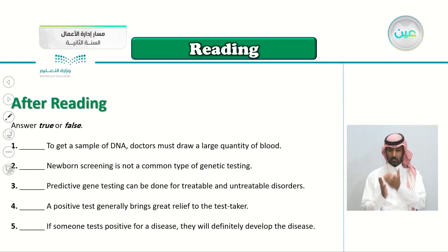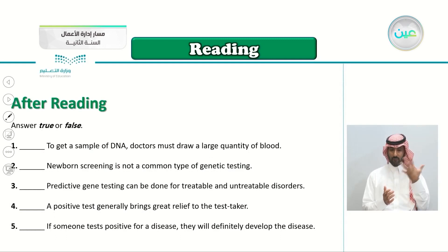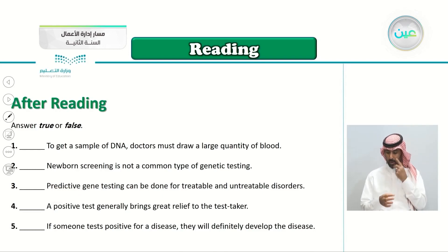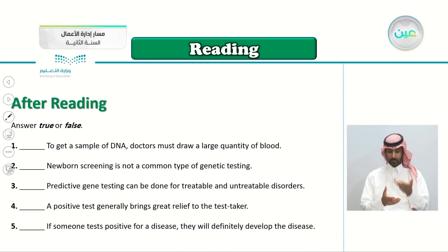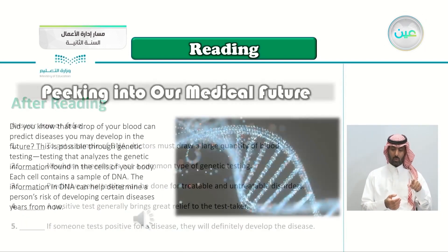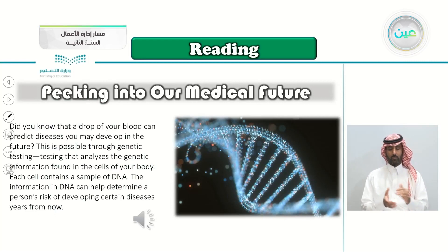Here we have the after-reading questions — true or false. Number one: to get a sample of DNA, doctors must draw a large quantity of blood. Number two: newborn screening is not a common type of genetic testing. Number three: predictive gene testing can be done for treatable and untreatable disorders. Number four: a positive test generally brings great relief to the test taker. Number five: if someone tests positive for a disease, they will definitely develop the disease. Let's read the article again to make sure we have the correct answers.